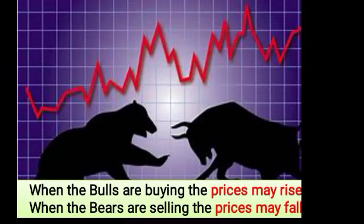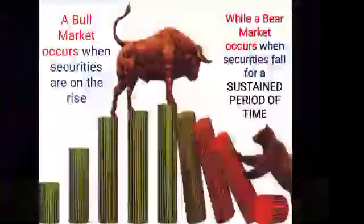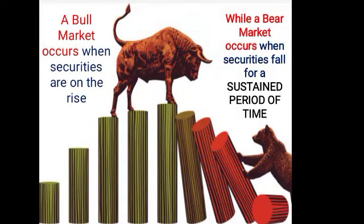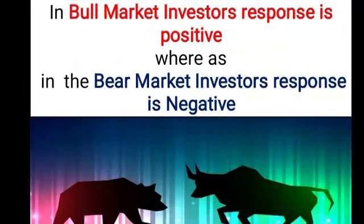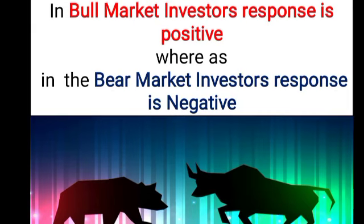When the bulls are buying, the prices may rise, and when the bears are selling, the prices may fall. A bull market occurs when securities are on rise, whereas bear market occurs when securities fall for a sustained period of time. In the bull market, investor's response is positive, whereas in the bear market, investor's response is negative.